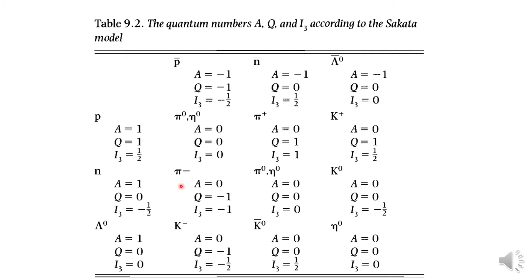Similarly for lambda zero, the baryon number is 1 and this charge is 0 and this third component is equal to 0. And similarly for lambda zero bar, this is just opposite of lambda zero.